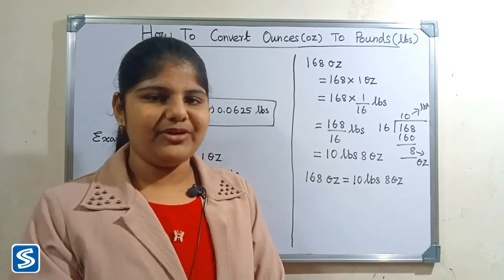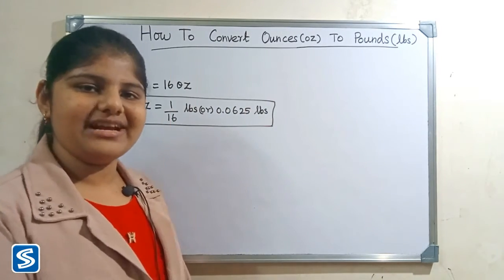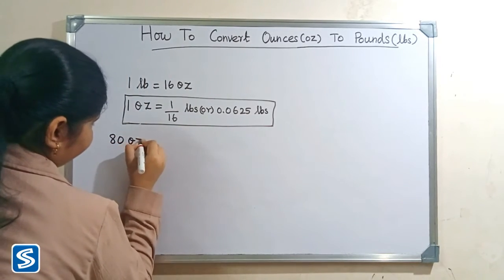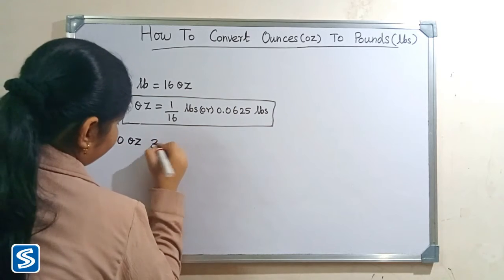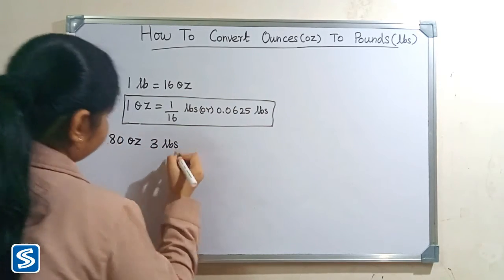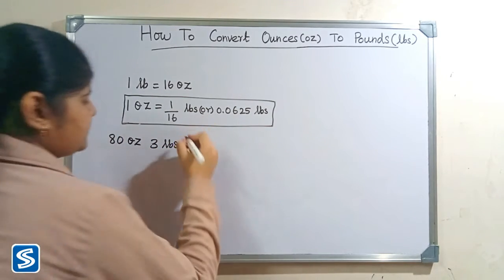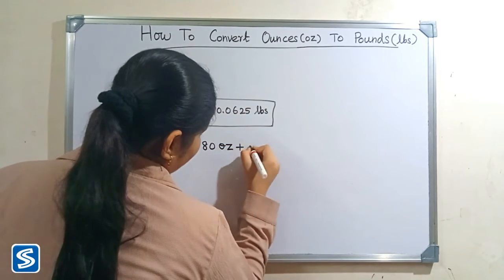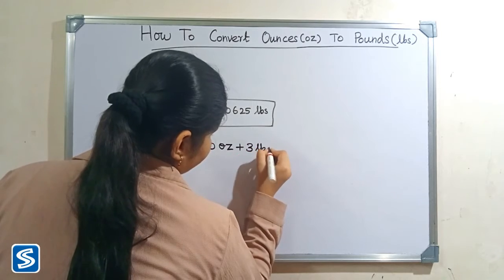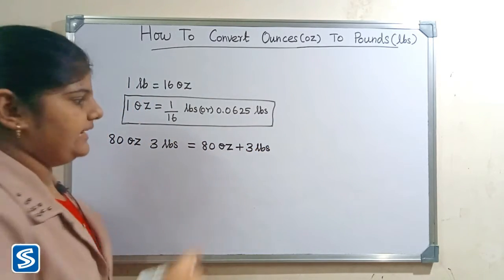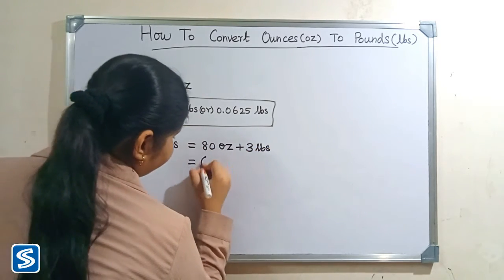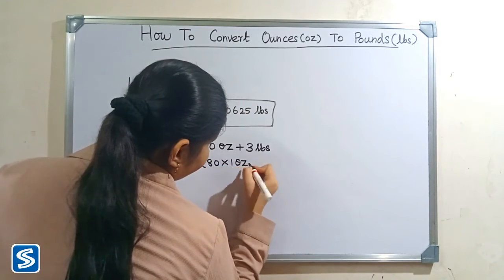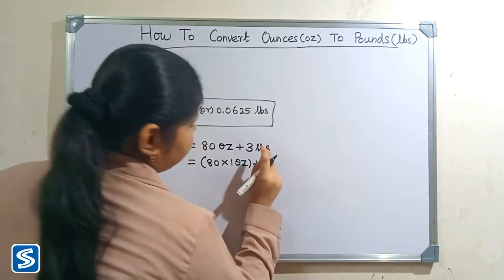Let's take one more example. For example, 80 ounces 3 pounds. 80 ounces 3 pounds will be 80 ounces plus 3 pounds. 80 ounces can be written as 80 × 1 ounce plus 3 pounds.